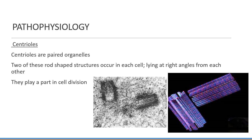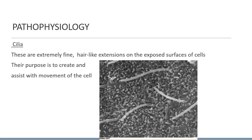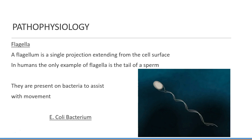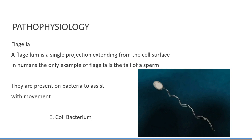Centrioles are paired organelles — two rod-shaped structures that occur in each cell, lying at right angles from each other. They play an important part in cell division. Cilia are extremely fine hair-like extensions on the exposed surfaces of cells, and their purpose is to create and assist with movement. A flagellum is a single projection — basically a tail — that extends from the cell surface. In humans, the only example of a flagellum is the tail of a sperm. They're also present on bacteria to assist with movement.